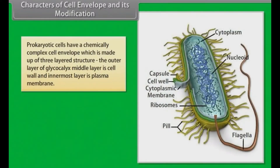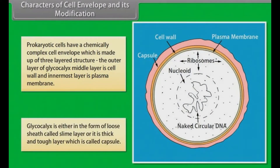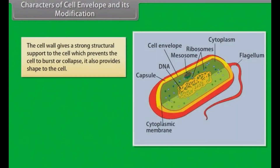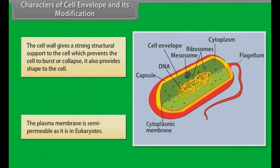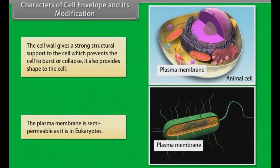Prokaryotic cells have a chemically complex cell envelope, which is made up of a three-layered structure: the outer layer of glycocalyx, the middle layer is the cell wall, and the innermost layer is the plasma membrane. Glycocalyx is either in the form of a loose sheath called slime layer, or it is a thick and tough layer called capsule. The cell wall gives strong structural support, prevents the cell from bursting or collapsing, and also provides shape to the cell. The plasma membrane is semi-permeable, as it is in eukaryotes.